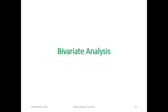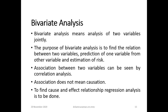Bivariate analysis means analysis of two variables jointly. The purpose of bivariate analysis is to find the relation between two variables, prediction of one variable from another variable, and estimation of risk. Association between two variables can be seen by correlation analysis. Association does not mean causation — to find a cause-and-effect relationship, regression analysis is to be done.